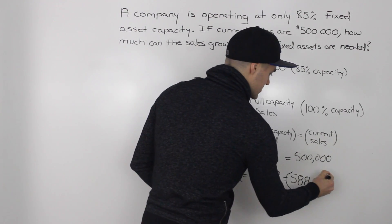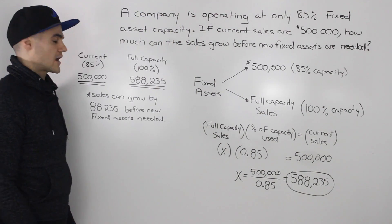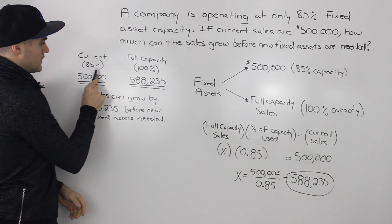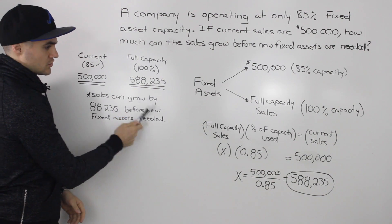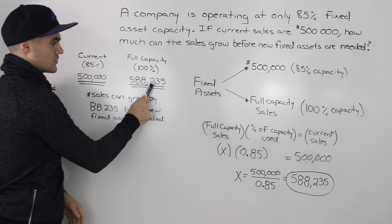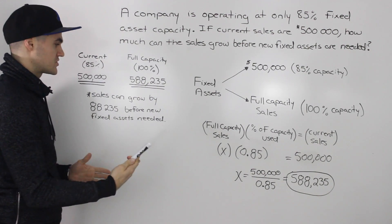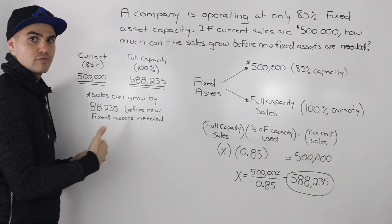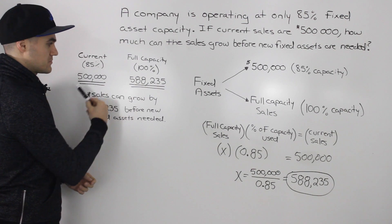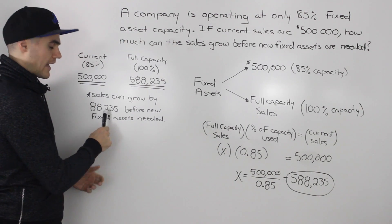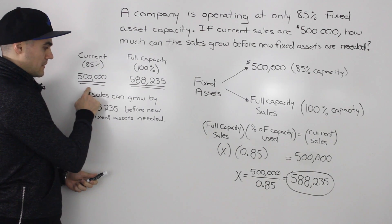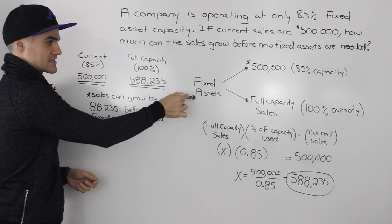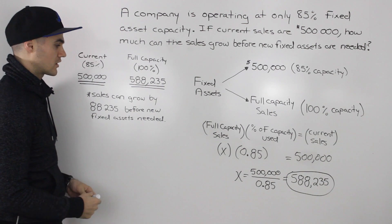That represents our full capacity sales. Currently, these fixed assets are generating $500,000 worth of revenue at 85% capacity, but they have the potential to generate $588,235 when used at 100%. So the sales can grow by $88,235 before any new fixed assets are needed — that's the difference between those two numbers. Any growth in sales beyond that $88,235 will require purchasing new fixed assets.